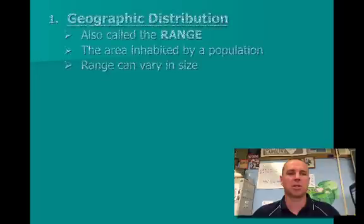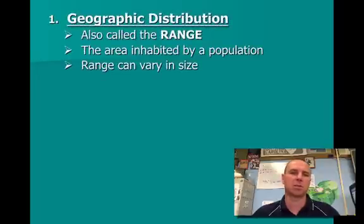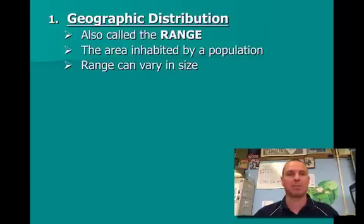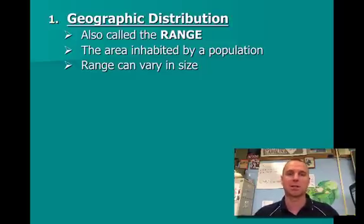Let's go over geographic distribution first. Geographic distribution is talking about the range of an organism. The range is simply the area inhabited by the population, whatever you're talking about. A snail's range would be a lot less than a bird's range. Human range — we can go anywhere on the planet, so we have the largest of all the ranges. Geographic distribution is going to affect population size.